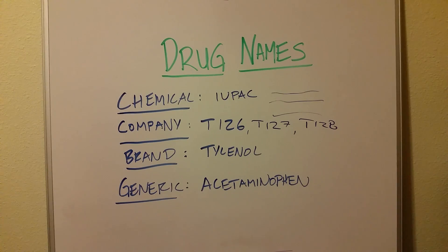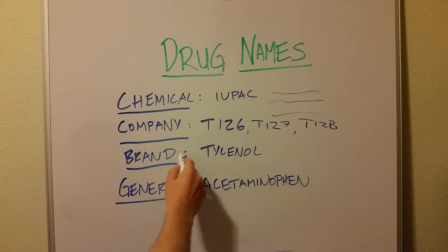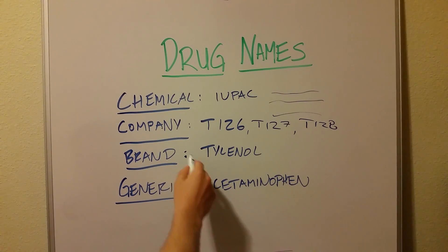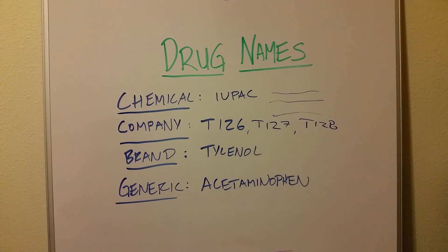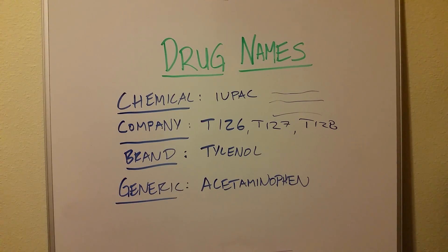Some fun facts: the average cost to get a drug from idea to brand name is anywhere from $100 million to $350 million per drug. Another interesting thing is that some of the most expensive drugs out there are now called biologics, and a lot of them go by brand names because they're all really new. Part of the Affordable Care Act reduced the time from branded to generic to about 12 years, so generic versions of many biologic drugs will make biologics and immunomodulators a lot cheaper — which is a good thing.